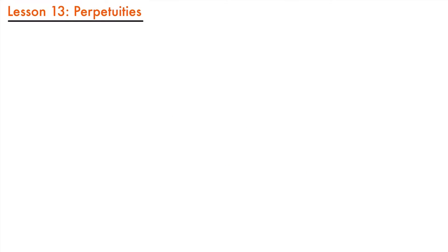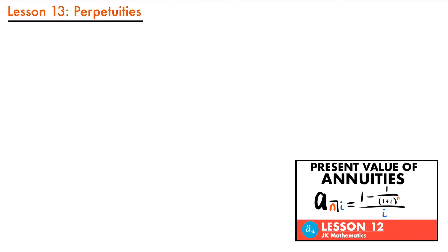Welcome back. Today we're going to be talking about perpetuities. Previously we discussed how to find the present value of an annuity or a series of payments. That present value essentially represented how much money we needed to invest today in order to finance those payments in the future. If you haven't seen our lesson on finding the present value of an annuity, I'll have that linked here, because that's going to be important to know how to do first.